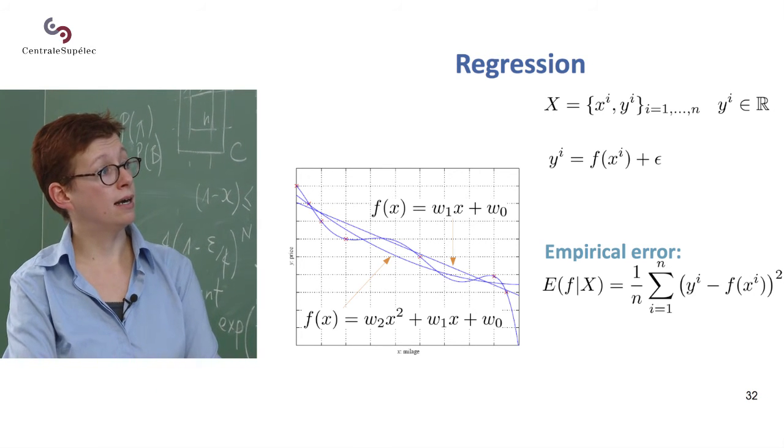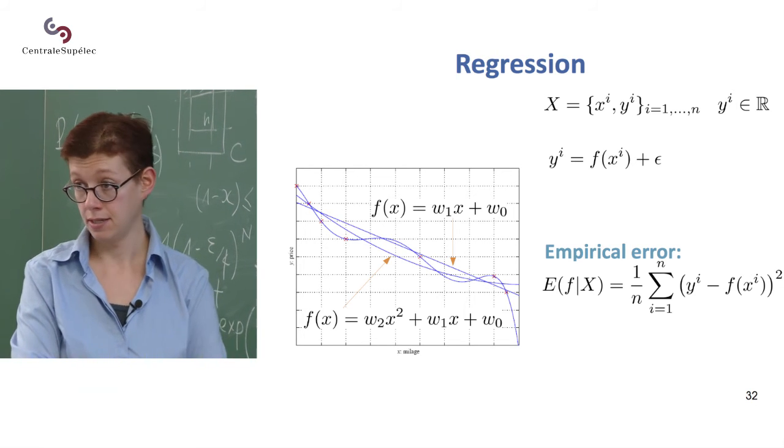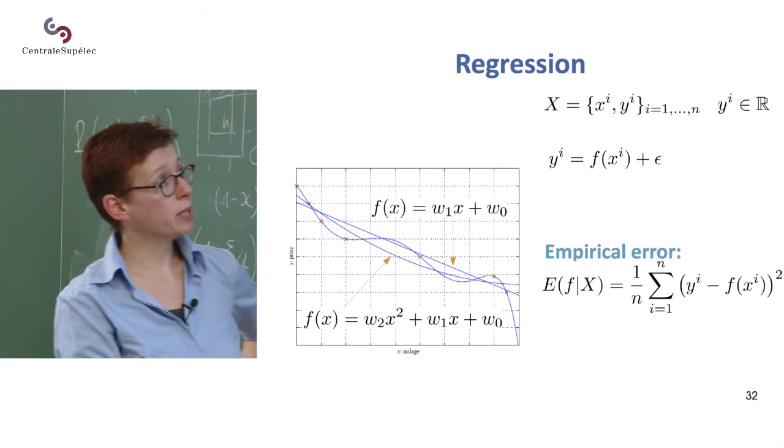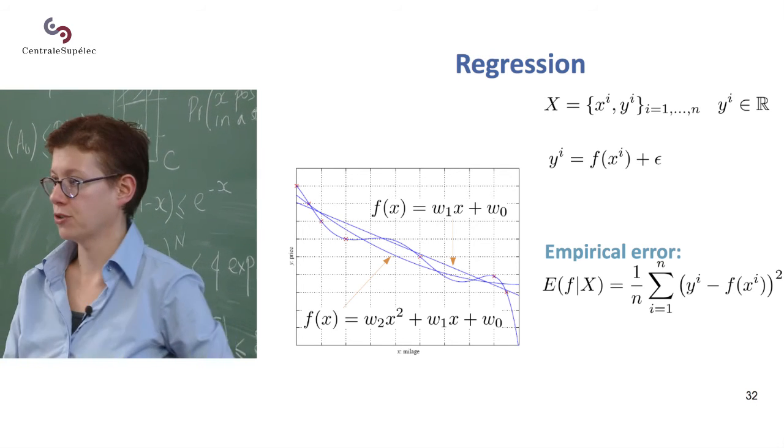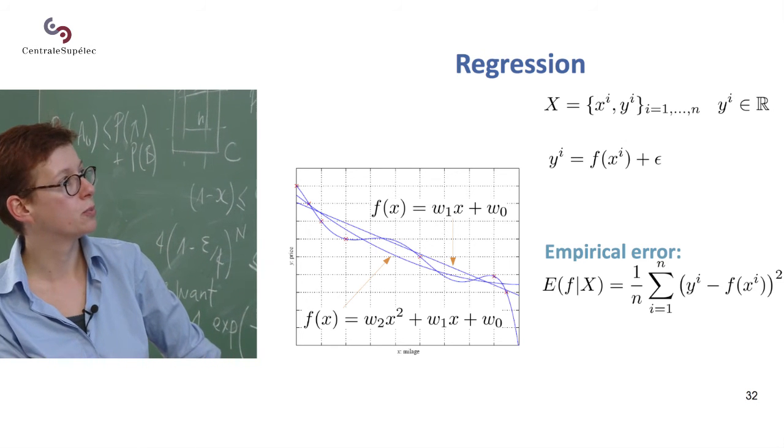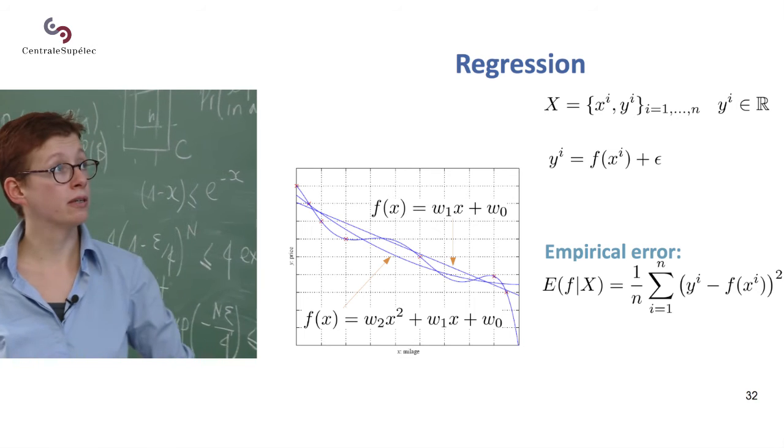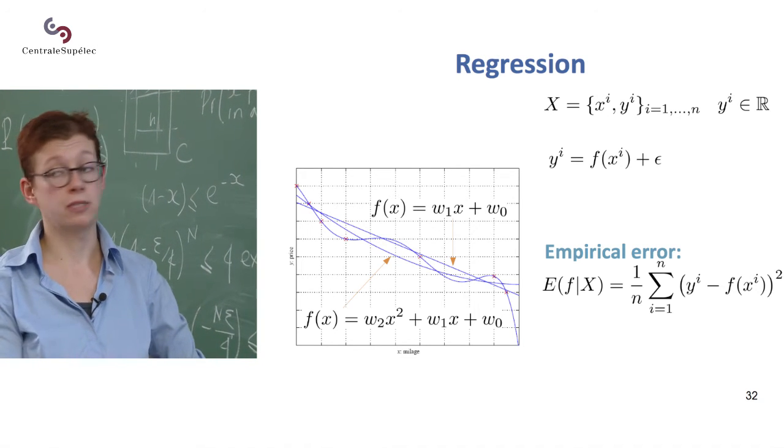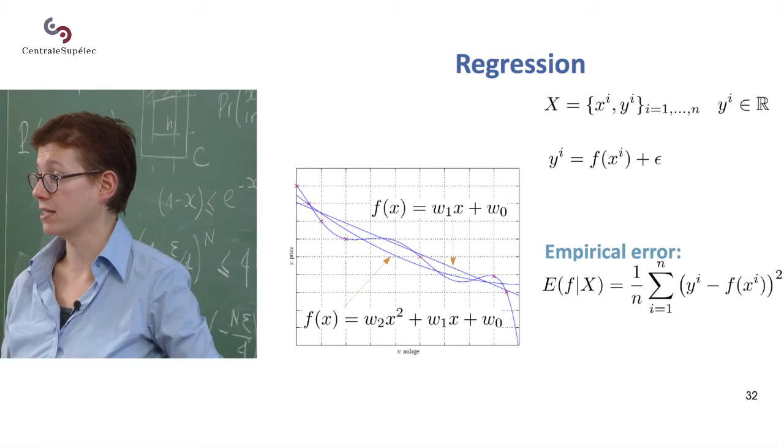So here, x is in that drawing one dimensional. So we have points that are, sorry, those small points here, that I'm not sure you see in the back but there are a few points here. And so you're learning a function of a particular shape that you have to define. So now your hypothesis space is what is the shape of this function.